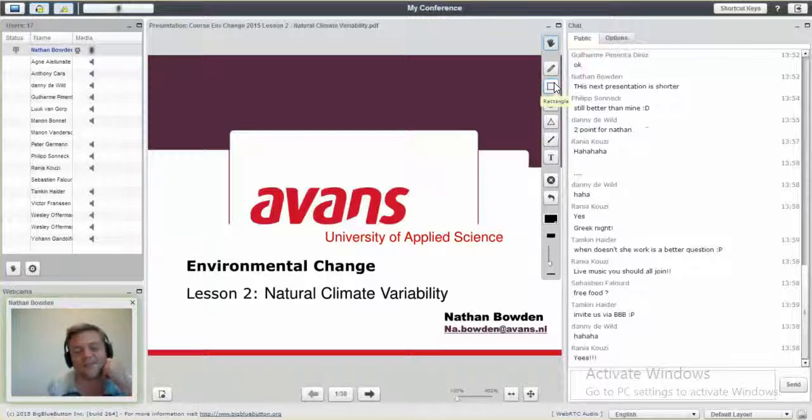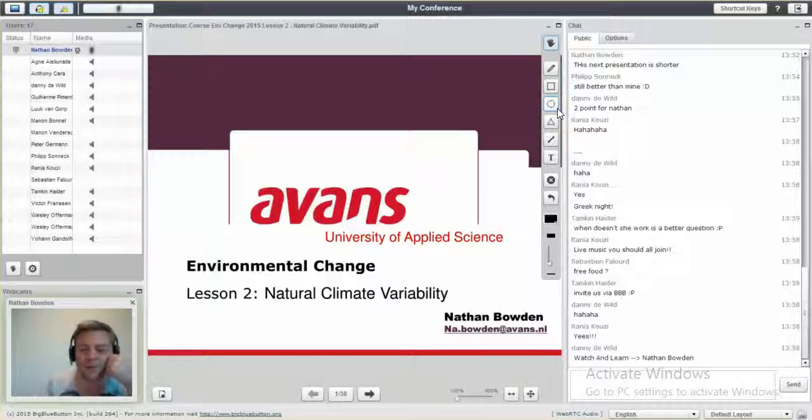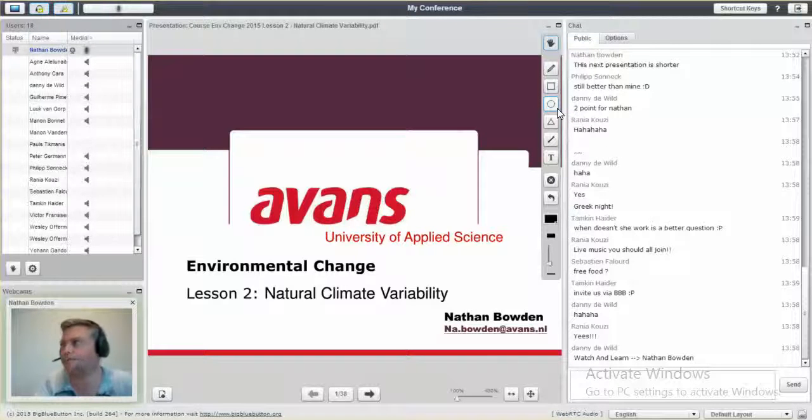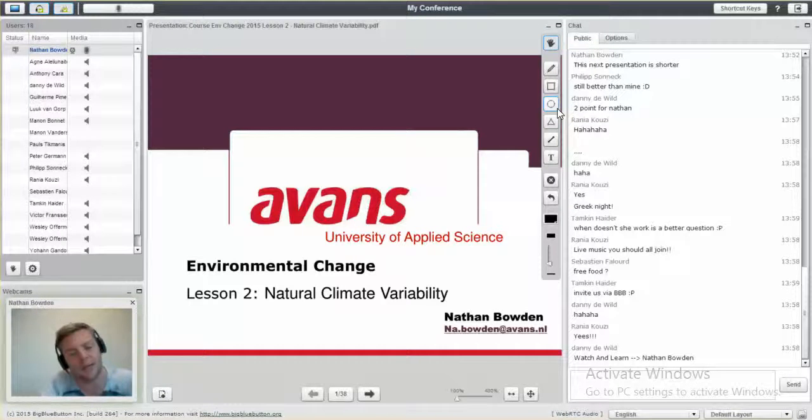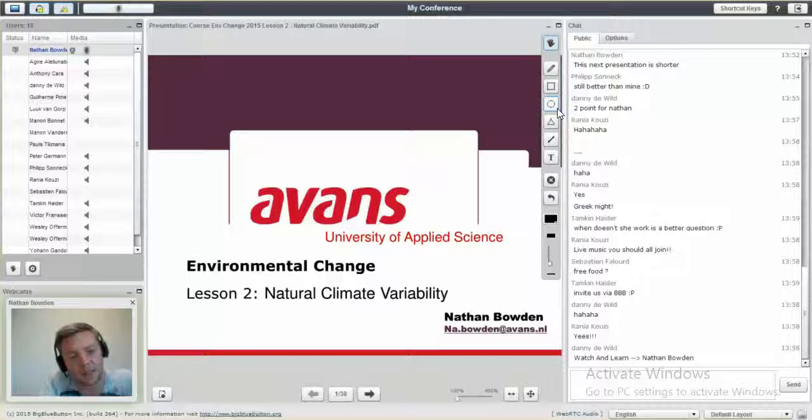Welcome back to the second class on environmental change. This one is on natural climate variability. In the previous course, I focused on the nasty things that we've been doing to our planet, especially in the last 50 years.